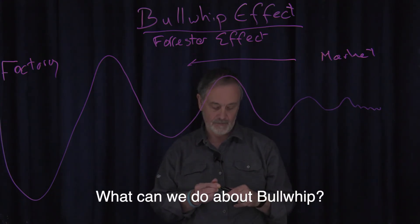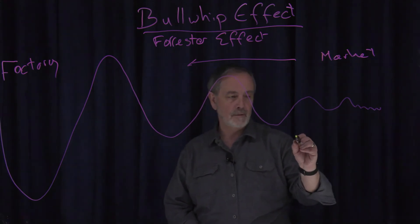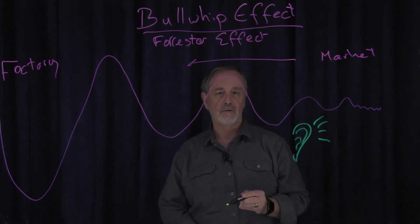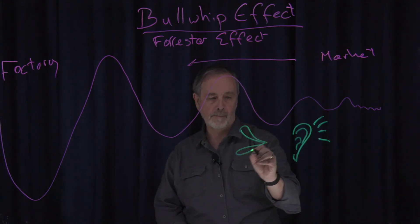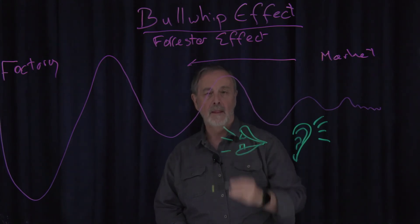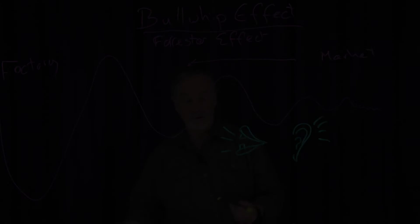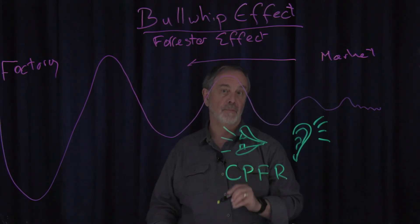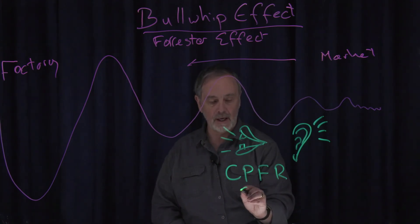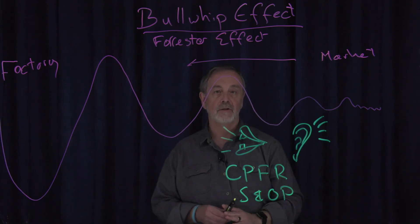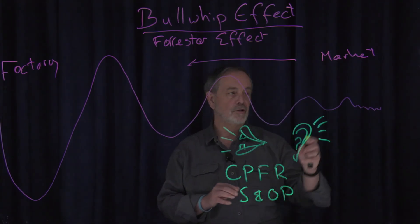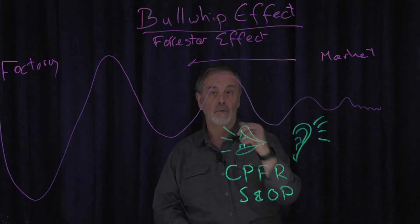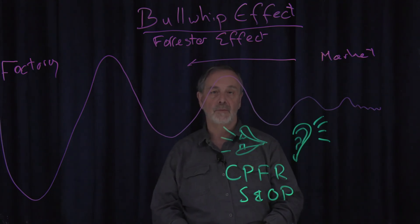What can we do about it? A number of things. We can listen to those signals and share them up and downstream. This is called CPFR — collaborative planning, forecasting and replenishment. We might include under that something called S&OP, sales and operations planning. Both of these are really where you're trying to get different parts of the supply chain — dyads in the supply chain — to talk to each other. And ideally what we want to do is share data all the way upstream in the supply chain.